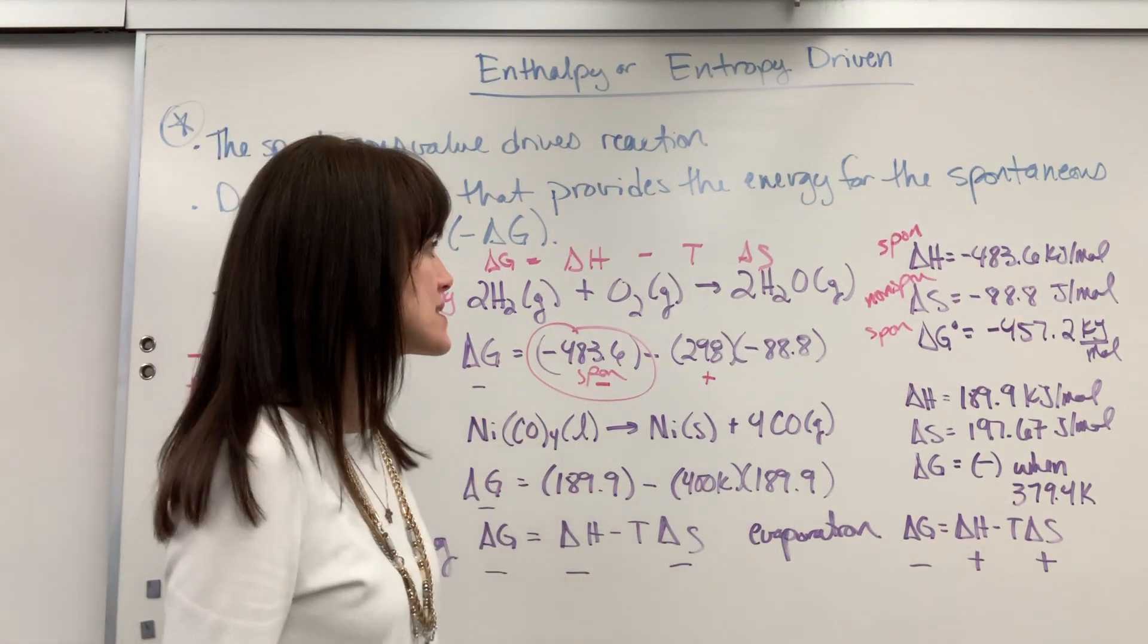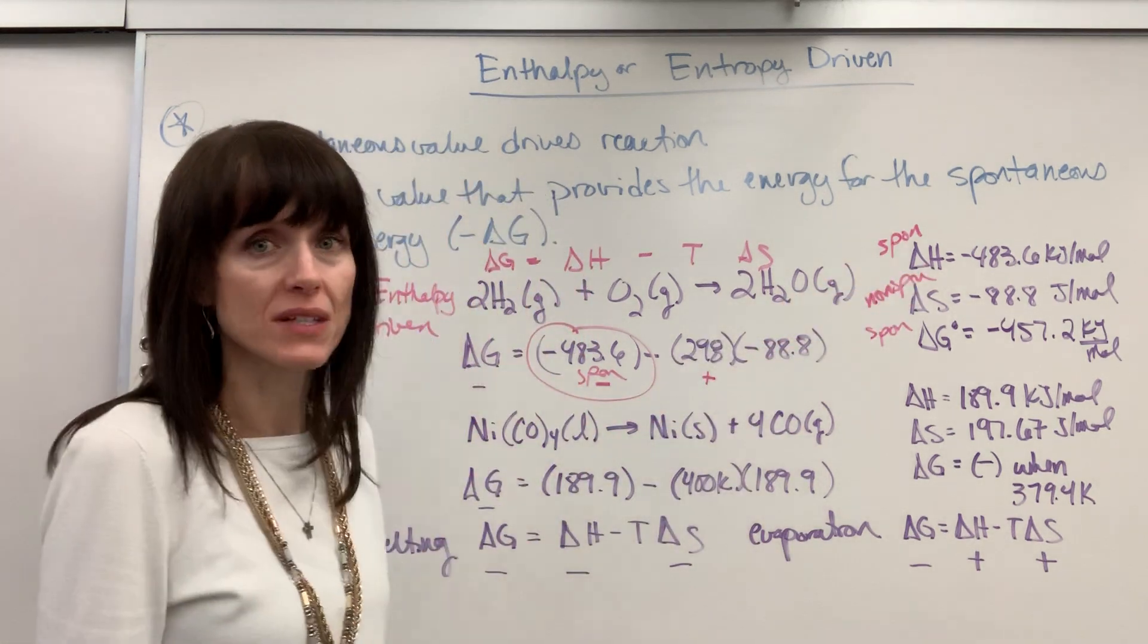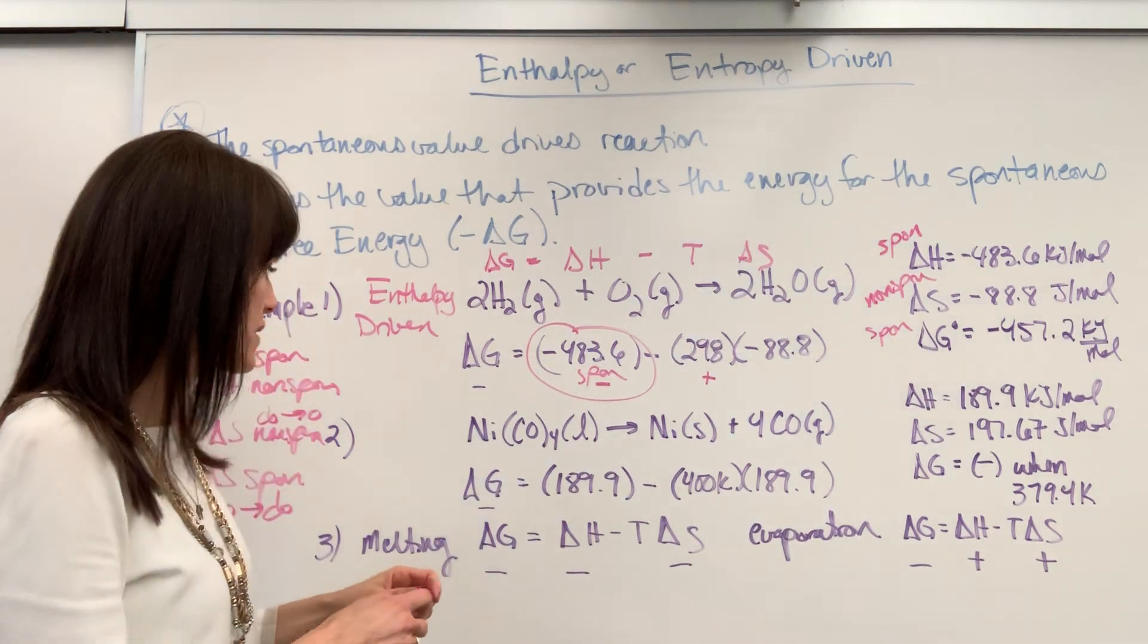So without even writing all this down, I could just go, oh, delta H is spontaneous. That's what's going to drive this. That's what's going to make delta G negative. Okay, let's look at another example.